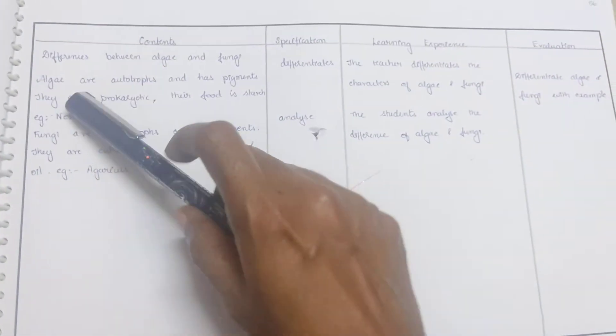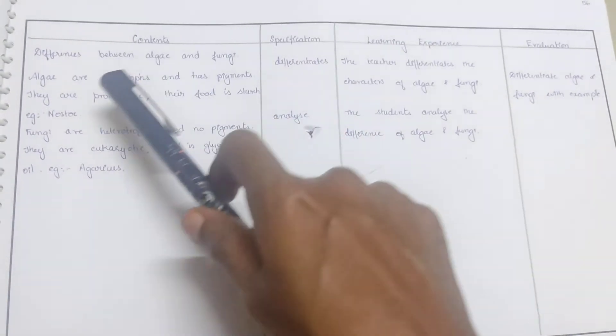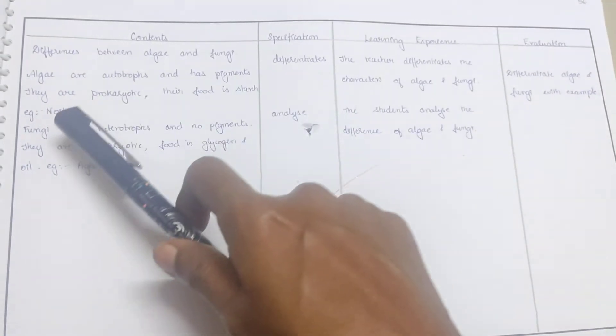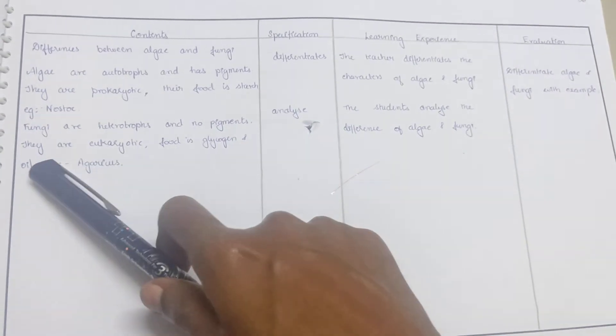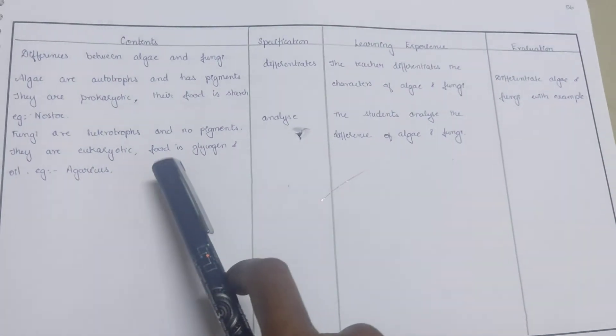Next, difference between algae and fungi: algae are autotrophs and have pigments, they are prokaryotic, and their food is starch. Example: Nostoc. Fungi are heterotrophs and they don't have any pigment, they are eukaryotic, and the food is glycogen. Example: Agaricus.